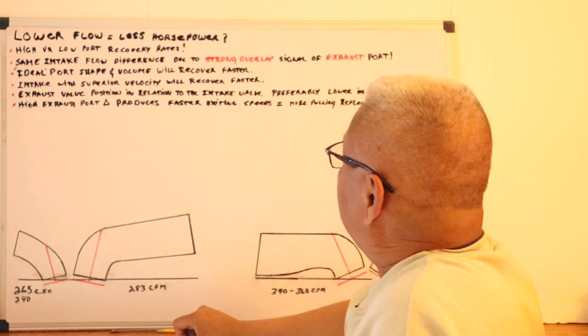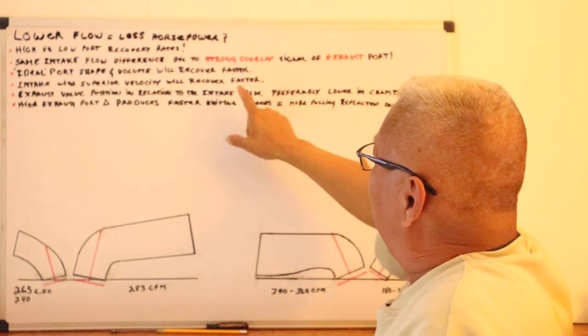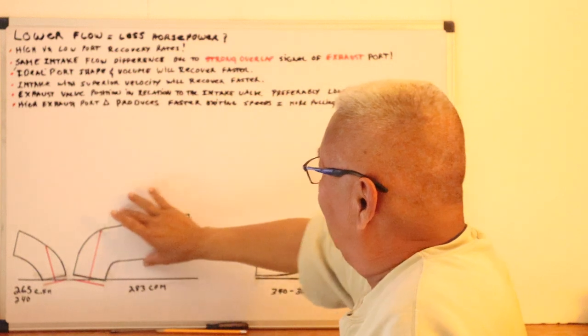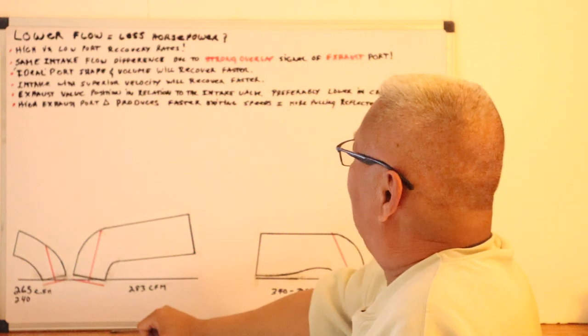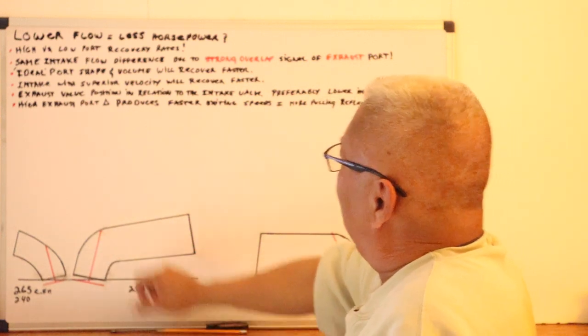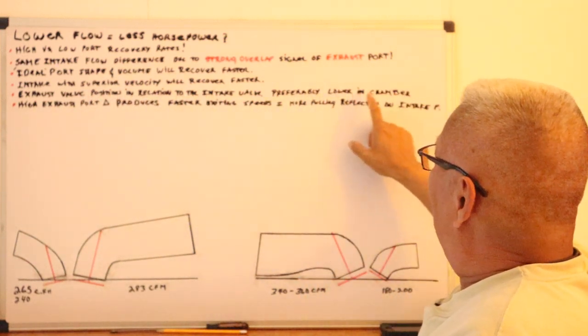So not only are you trying to pull your recovery, your port recovered column around this bend, you're not going to get a good job doing it. Here, it's simpler. It's one simple, less abrupt turn as opposed to this thing. Of course, we touch on that intake with superior velocity will recover faster. Shape and volume, once it's too big, port velocity goes down, your recovery rate suffers as well.